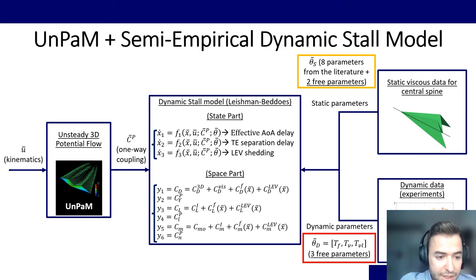Our model is trying to capture all these phenomenological effects. So first by using the unsteady 3D potential flow that we have in UnPAM. We input the kinematics here and then we get the potential flow coefficients. And then we use an empirical dynamic stall model due to Leishman and Beddoes. We use three ordinary differential equations to model the delay in the effective angle of attack, the delay in the 3D separation and the leading edge vortex shedding.